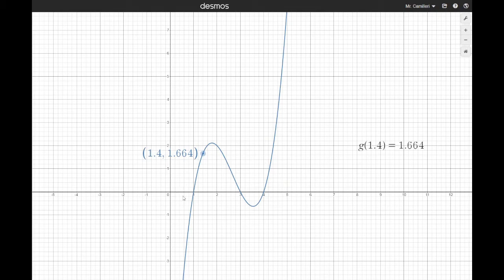So g of 1.4 is equal to 1.664. g of 3 is equal to 0. So what this means is that when x is 3, y is 0.